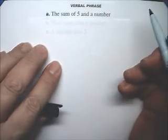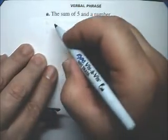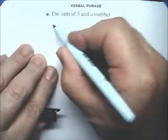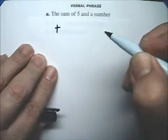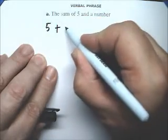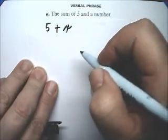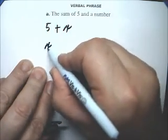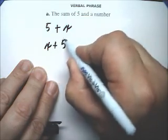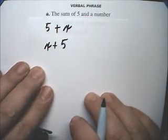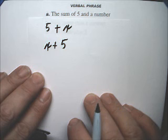It says the sum of 5 and a number. Okay, it's sum, so it's plus. That's the sum of 5 and a number, so 5 plus x. There, x plus 5, that's also the sum of 5 and a number.